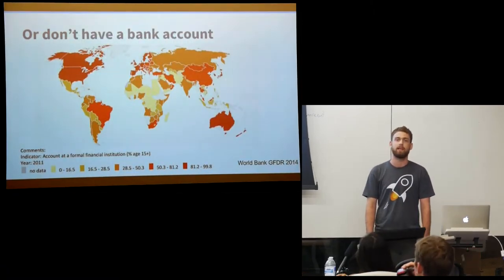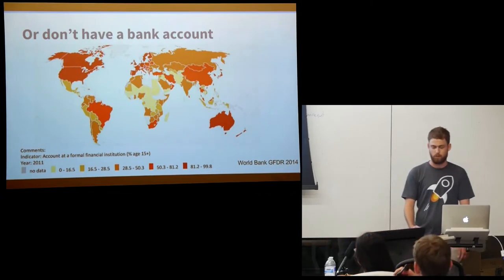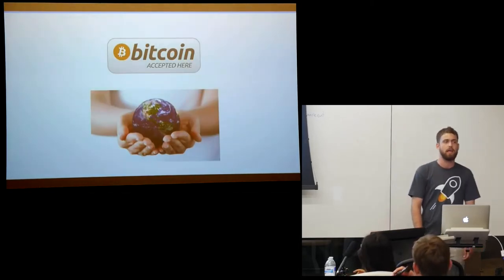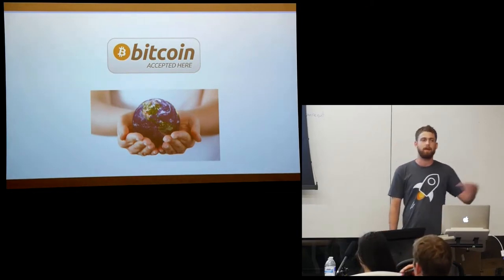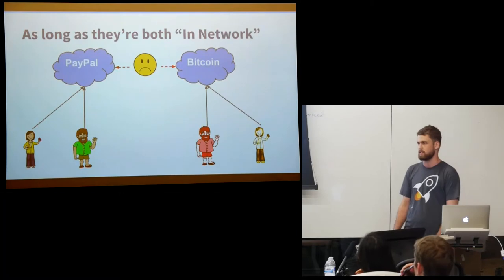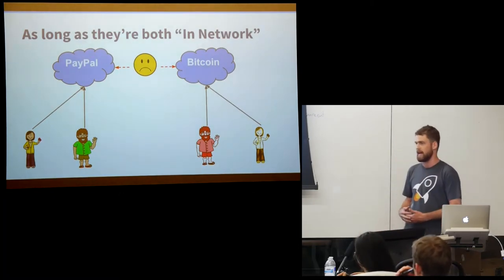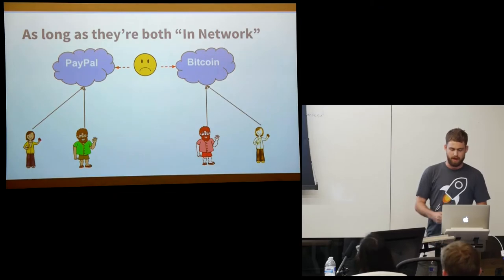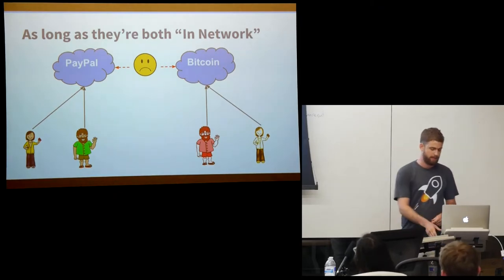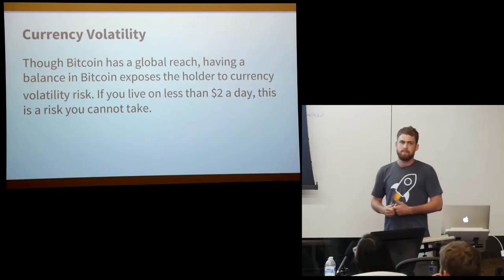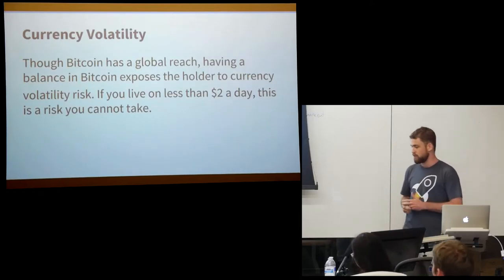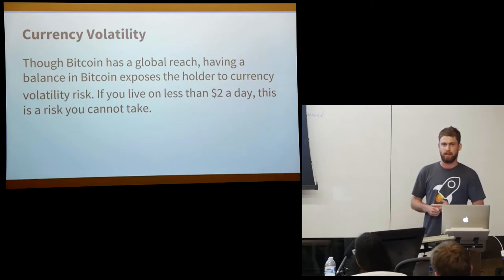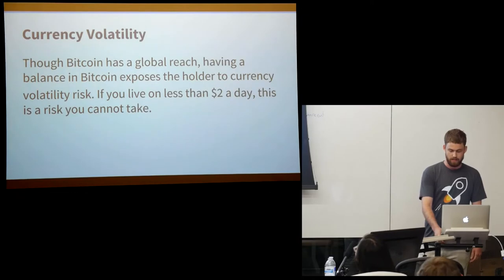Fortunately, a new payment system was created recently that lets anybody join and send money to anybody in the world, no matter what country they're in — it's called Bitcoin. But Bitcoin still suffers from an in-network problem; I can't use Bitcoin to send somebody US dollars in PayPal. And Bitcoin has another problem particularly for the underbanked: currency volatility. If you're living on $2 a day and someone sends you $10 of Bitcoin and it goes down 5%, that's half a day of wages lost.